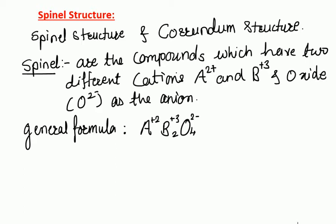This can be written simply as AB₂O₄. Spinel structures are of two types: one is the normal spinel structure and the second is the inverse spinel structure.